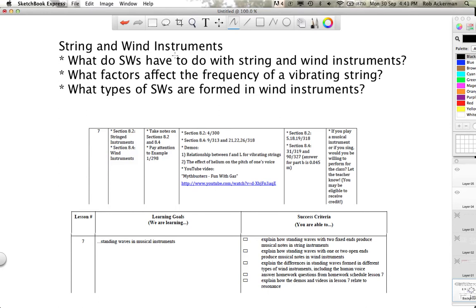The topic is string and wind instruments, and we're going to be talking about those standing waves (SWs). What do standing waves have to do with string and wind instruments? What factors affect the frequency of vibrating strings, like guitar, violin, and cello? And what types of standing waves are formed in wind instruments, from woodwinds like clarinet or saxophone to brass instruments like trumpet or trombone, and even the human voice, although some of us do it better than others—I'm talking about singing here.